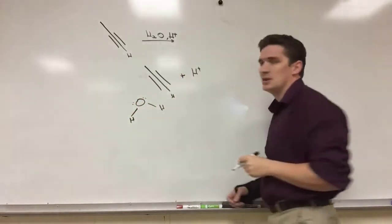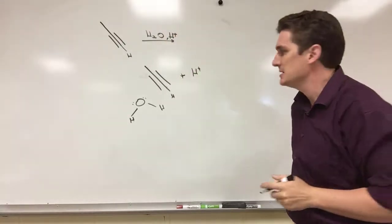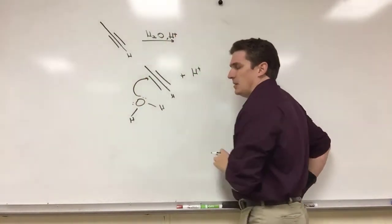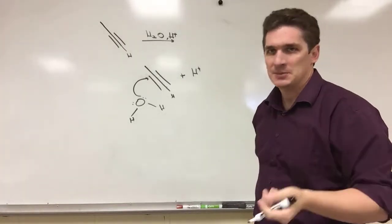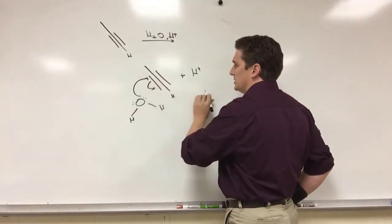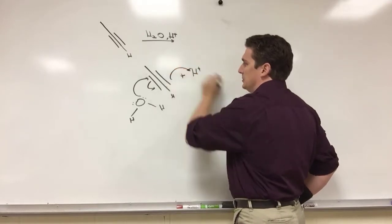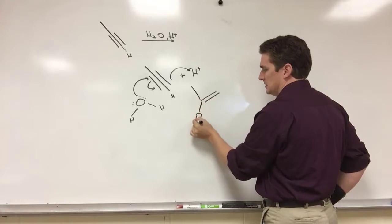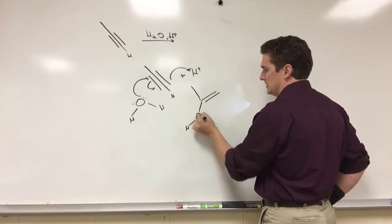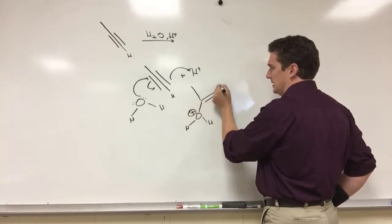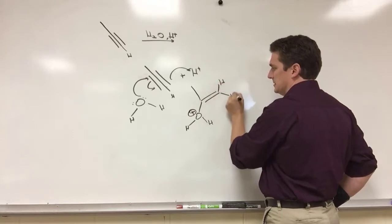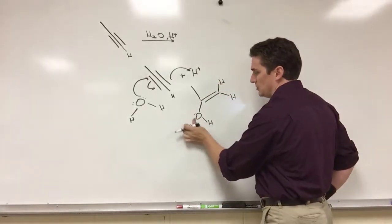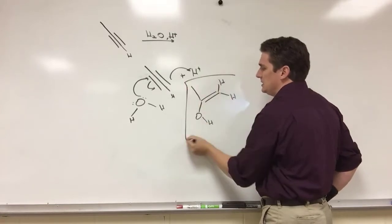Let's say we have our alkyne, we've got our water, and we've got H+ sitting off to the side — we do need acid to make this happen. What will happen is that our OH group will attack the most substituted carbon, we'll break the triple bond to make it a double bond, and we'll have attack on the hydrogen. What we will get is this intermediate compound.